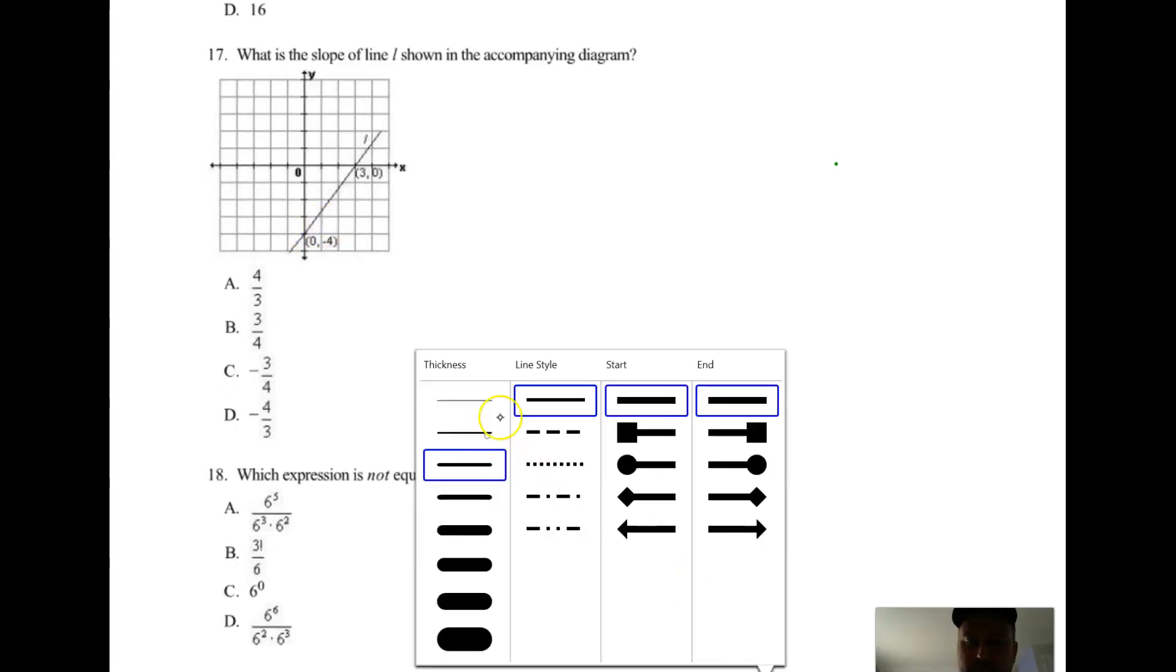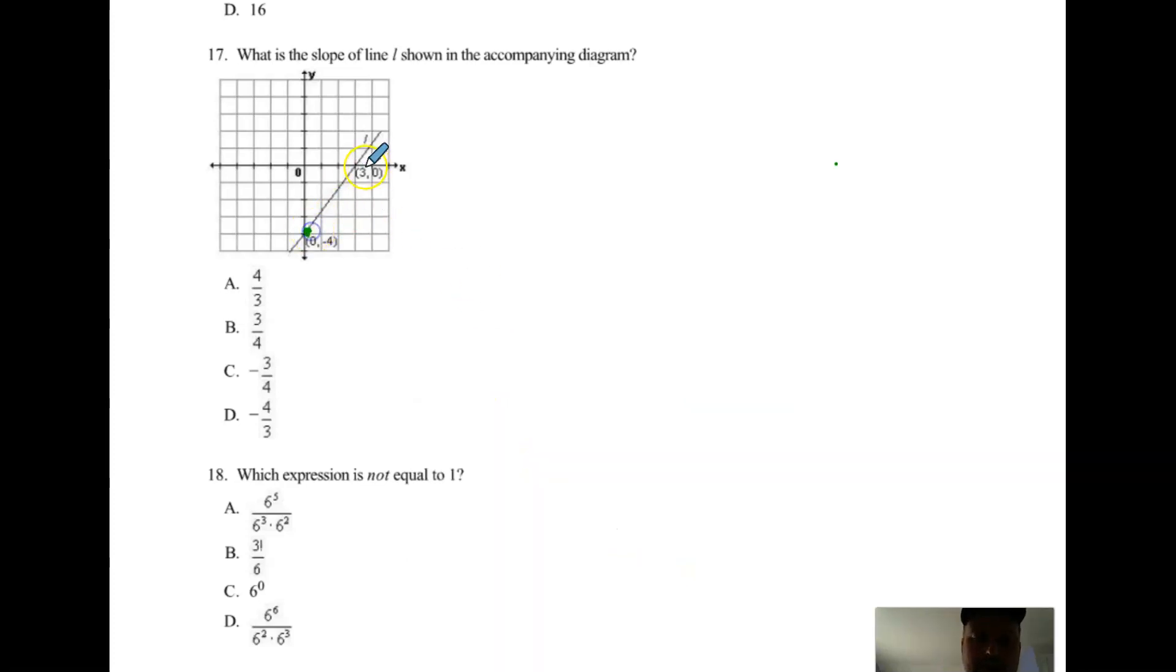You've got to go from here to here, right? So it looks like up four, three to the right. You should have crossed off C and D right away because those are negative slopes and clearly that's a positive slope.